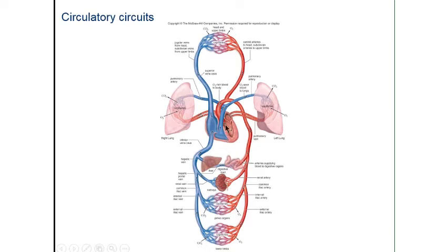Starting with the right atrium, blood goes to the right ventricle and then to both lungs where it turns from blue to red. Blood is not actually blue — oxygenated blood is bright red, whereas deoxygenated blood is a darker brick red. If you buy ground beef, the outside is bright red because it's exposed to air, but the inside is darker because it's deoxygenated. The blood then goes back to the left side where the left ventricle pumps it throughout the body, returning to the heart through the superior vena cava.